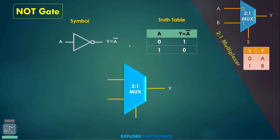Now let us implement a NOT gate using a 2-to-1 MUX. As you know, a NOT gate gives the output complementary to input A. If A is the input, A-bar is the output. When A is equal to 0, output will be 1; when A is equal to 1, output will be 0.